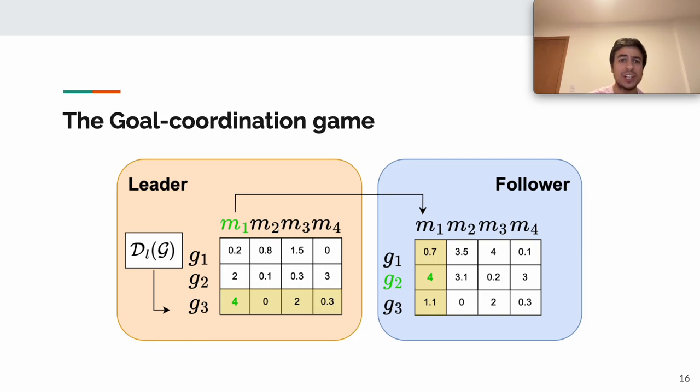When an agent is the leader, the entries of its matrix answer the question: What reward do I expect in this episode if I transmit message M when I have goal G? When an agent is the follower, the question is: What reward do I expect in this episode if I chose goal G when I receive message M? After playing several episodes, every agent updates its matrices to reflect the average reward for that specific goal-message association computed on the batch of collected episodes.